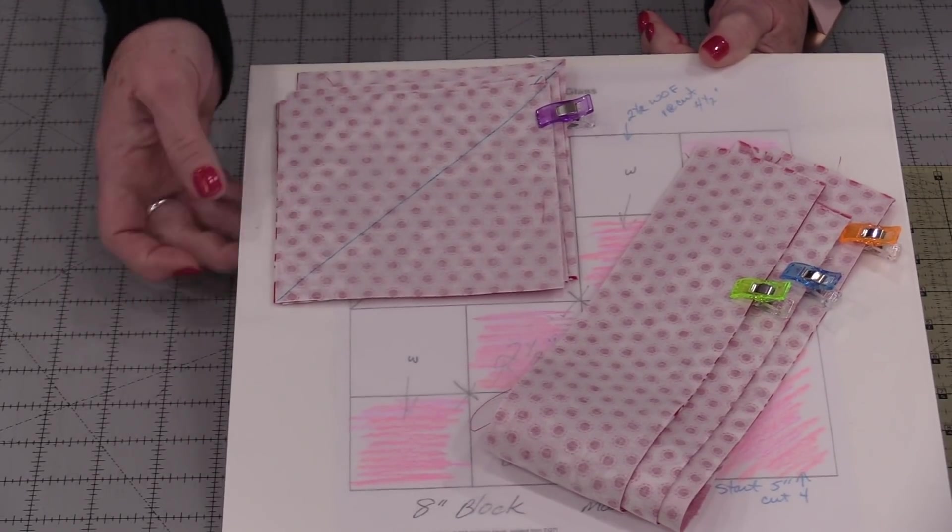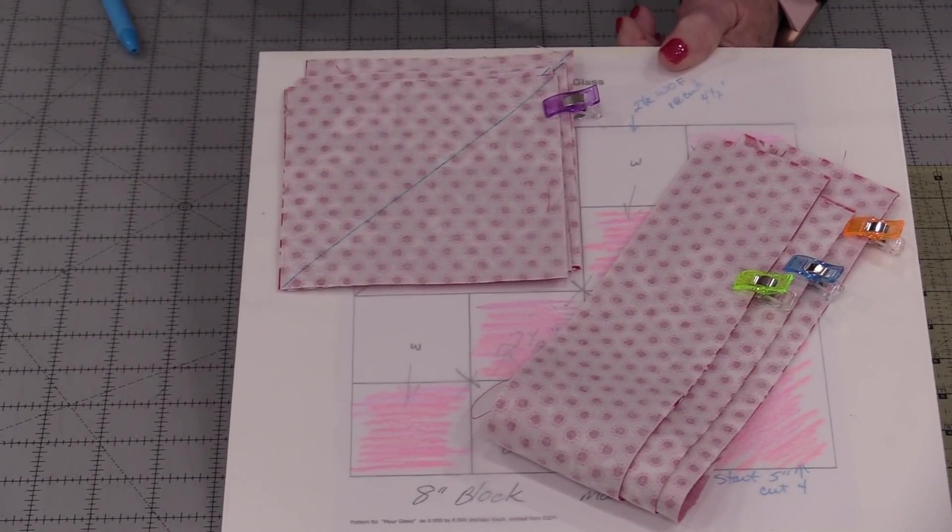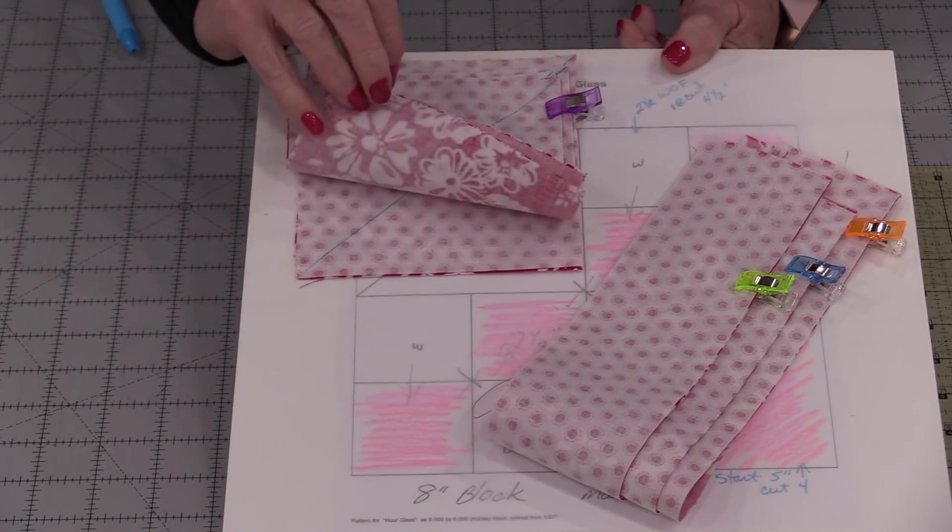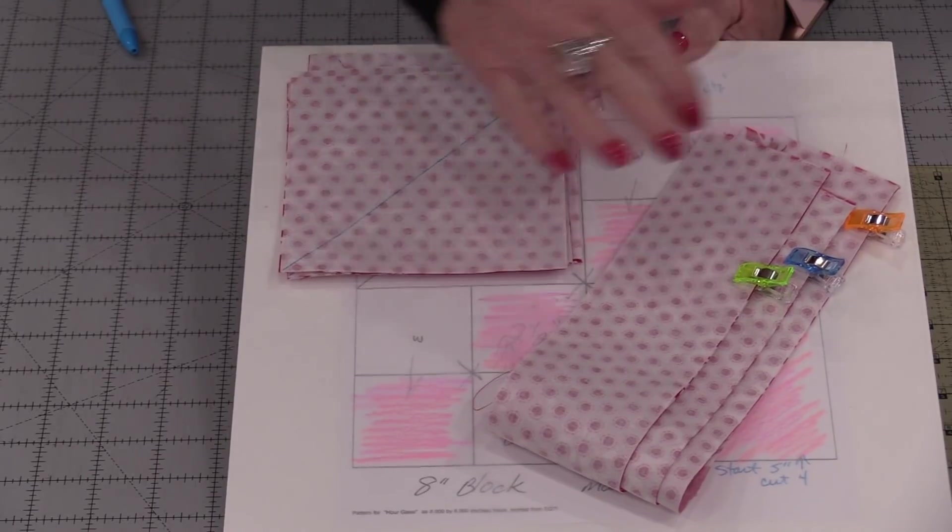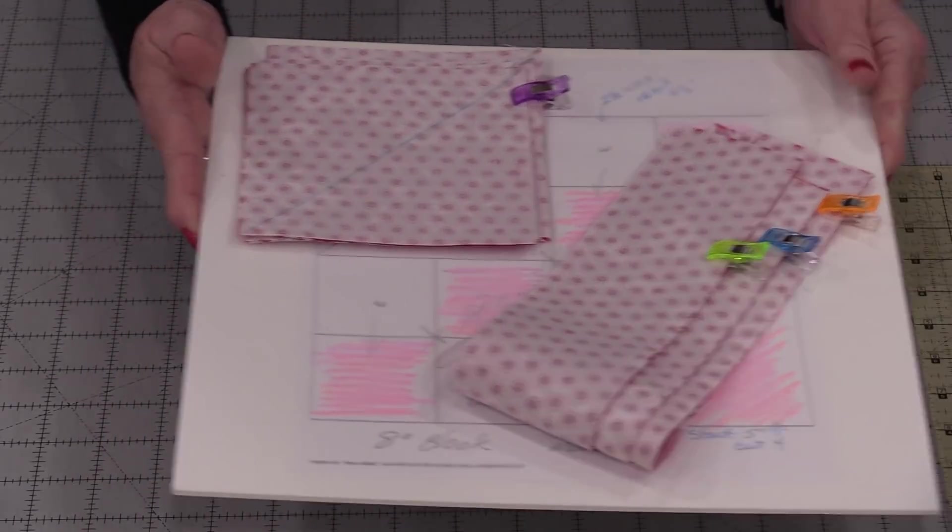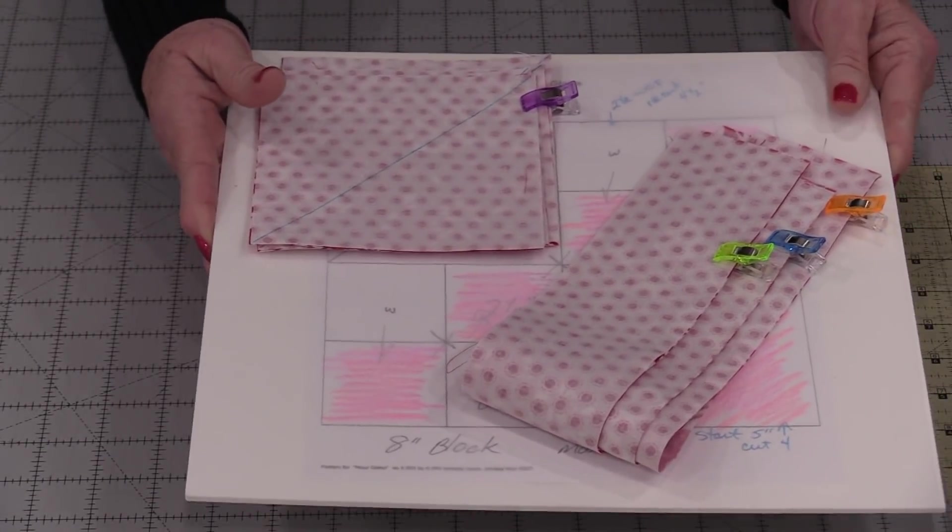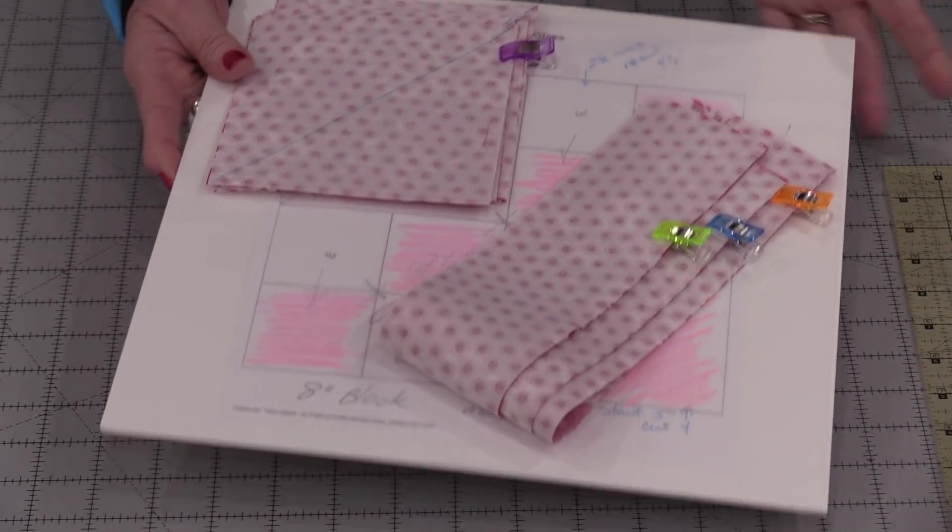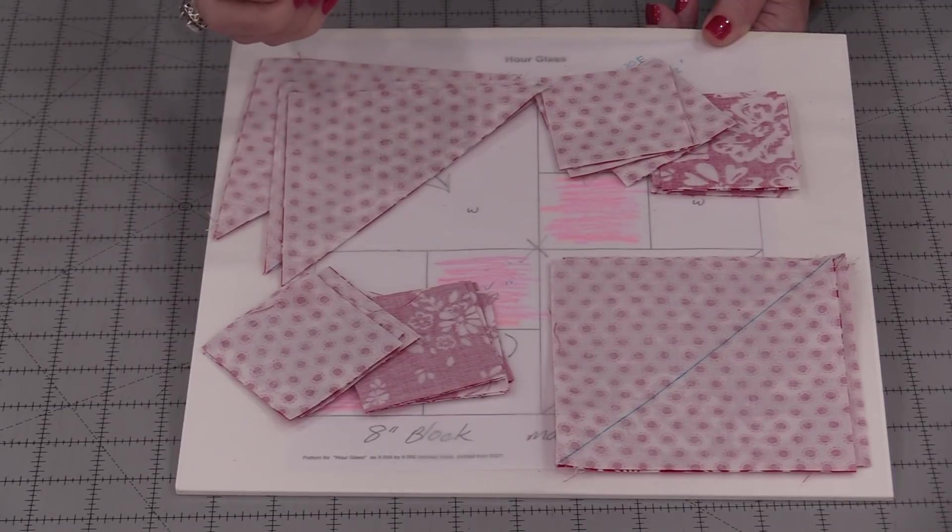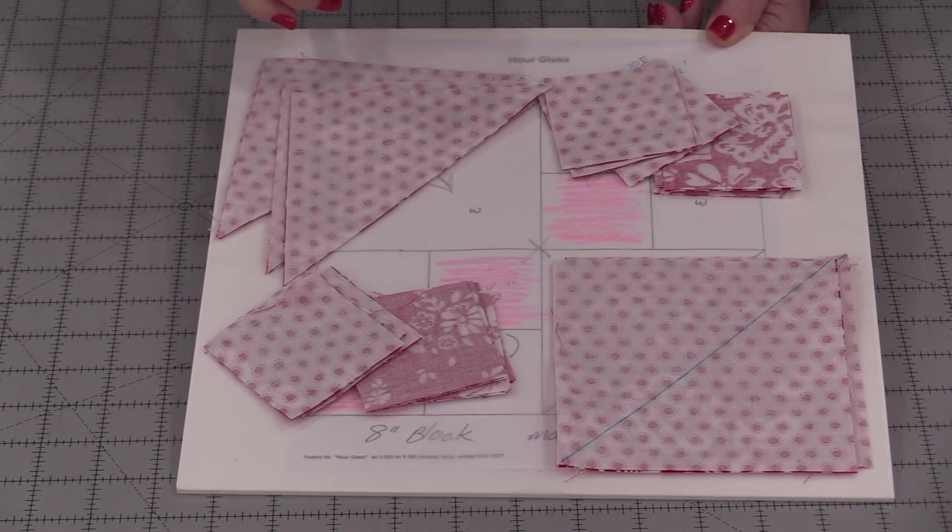I have my half-square triangles ready to go. I have my lines drawn. They're all stacked together, ready to go to the machine. Same with my strips. I can just pick this up and bring it right to the machine. I know that this fabric belongs to this block. With each stage of cutting or pressing, I'm going to put them back on the board.